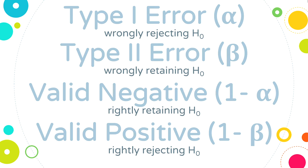There are actually four possible outcomes as a result of our decision. It's easy to think there's only two — I decide to reject or I decide to retain — but if I reject the null hypothesis, I could be wrong in that rejection, which would be called a type one error. If I reject the null hypothesis and I was correct in doing that, that would be a valid positive. If I retain the null hypothesis but I'm wrong about that, that would be a type two error. But if I retain the null hypothesis and it was true, that would be a valid negative.